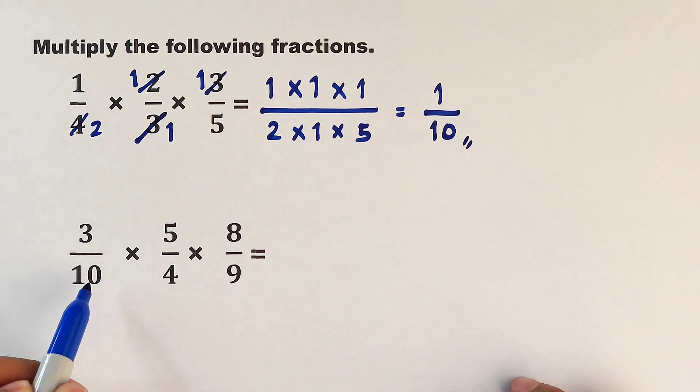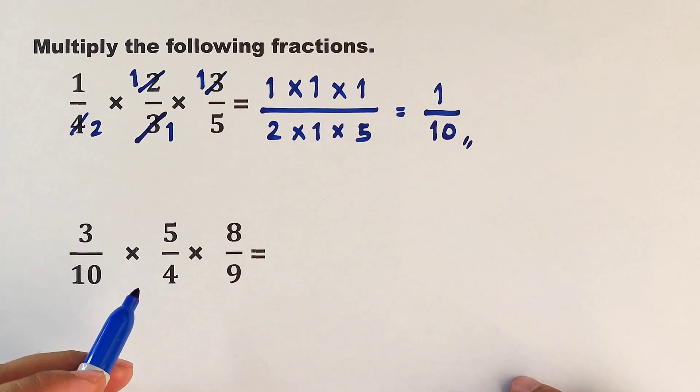Now let's continue. We have 3 over 10 times 5 over 4 times 8 over 9. Let's try and observe some of the numbers here. As you can see from the start, we have 3 and here we have 9. We can cancel this out—it will become 1, and as for the 9, it will become 3.